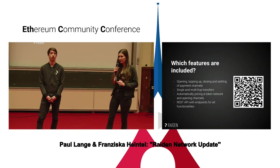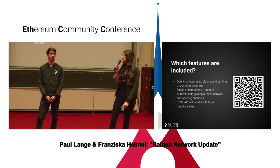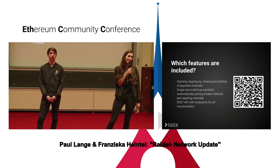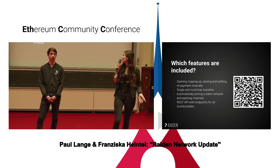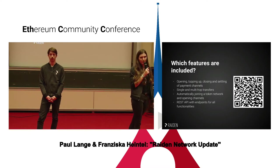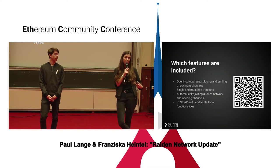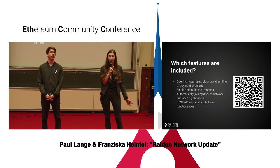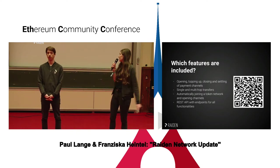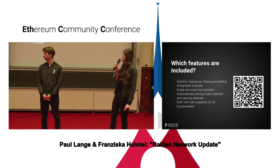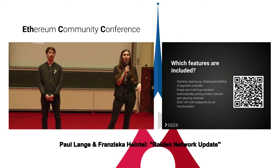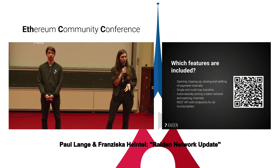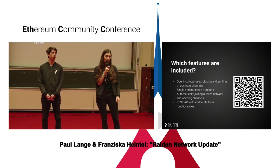Eventually all these limits will drop, but for the bug bounty release it's limited to that. It still comes with all features you'd expect from a payment channel network: you can open channels, top them up, close them, settle them, and do single and multi-hop transfers — direct payments with people you have an on-chain deposit with, as well as mediated transfers to others in the network. There's also an optional feature to automatically join a token network and connect to peers that make sense for the network topology. And it comes with a REST API with endpoints for all functionalities.